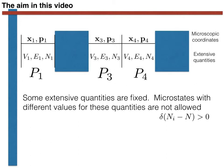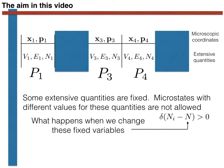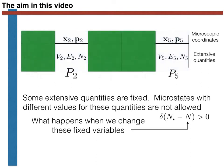With all that material reviewed, let's now turn to the purpose of this video. Our aim is to determine what happens when we change the values of the extensive variables that we have constrained. This is going to change the set of microstates in phase space that are accessible to the system. For example, when we change the number of atoms, microstates 1, 3 and 4 become inaccessible because they contain the wrong number of atoms, while microstates 2 and 5 become accessible. What we would like to know is how to calculate the associated change in the value of the entropy.